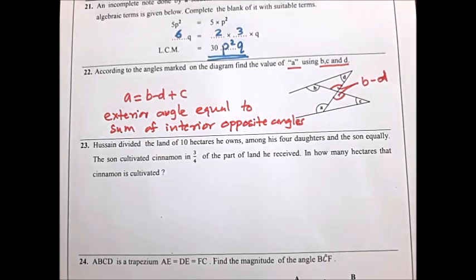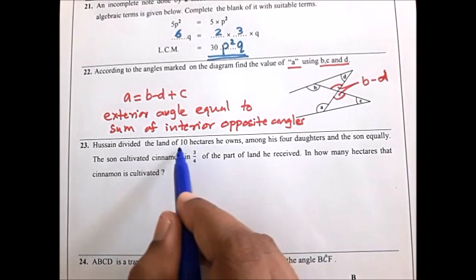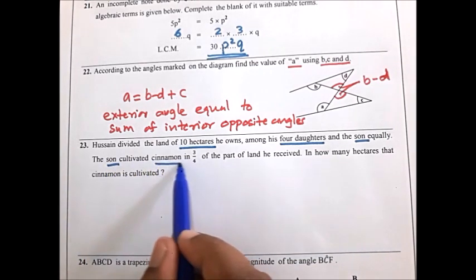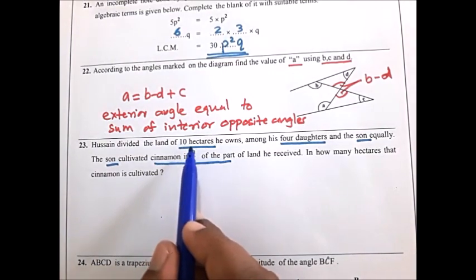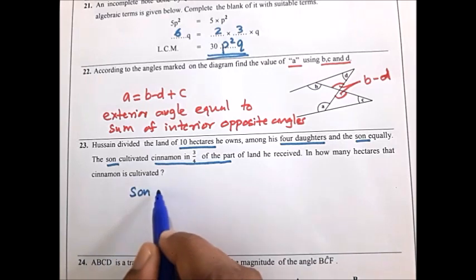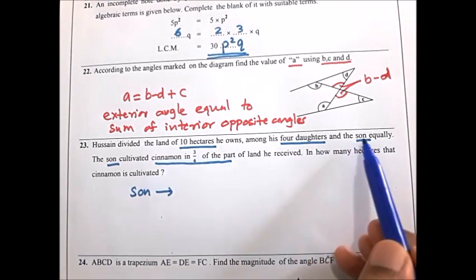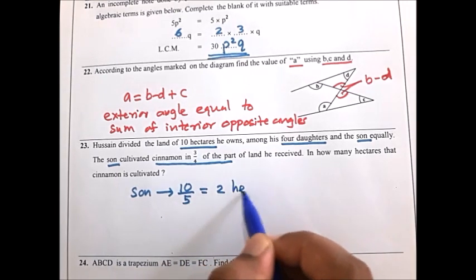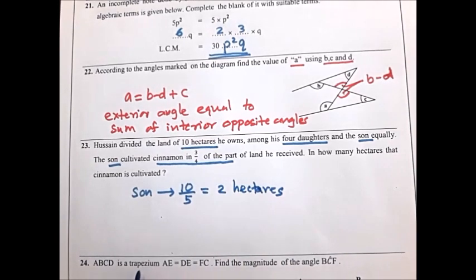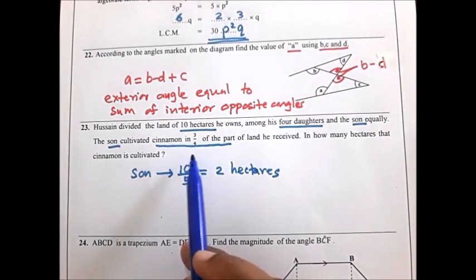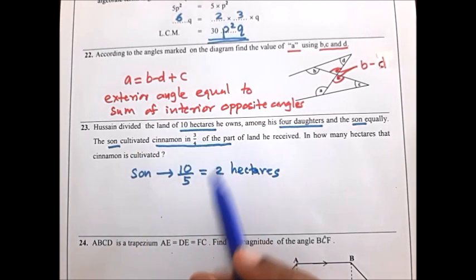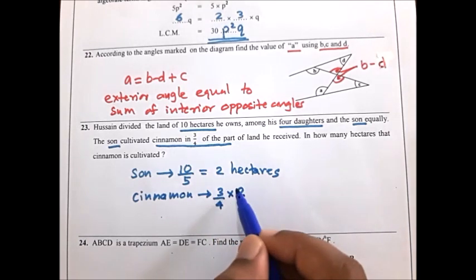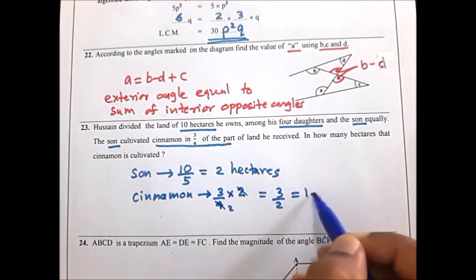Let's look at the 23rd question. Zen divided land of 10 hectares among his four daughters and son. 10 hectares divided equally between five of them gives 2 hectares to the son. The son cultivated cinnamon in 3 over 4 of his part. So 3 over 4 of 2 hectares — cancel 2 and 4 to get 2 — gives 3 divided by 2 equals 1.5 hectares.